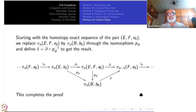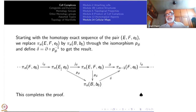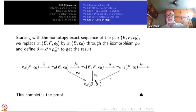Start with the homotopy exact sequence of the pair (E, F). Here pi_n(E, F) sits in the sequence with the boundary map going to pi_{n-1}(F) and inclusion maps on the other side. From pi_n(E, F), go via p-check — which is an isomorphism — to pi_n(B, B_0). The connecting homomorphism delta is defined as p-check inverse followed by the boundary map. That automatically gives an exact sequence, completing the proof of the long exact sequence of a fibration.